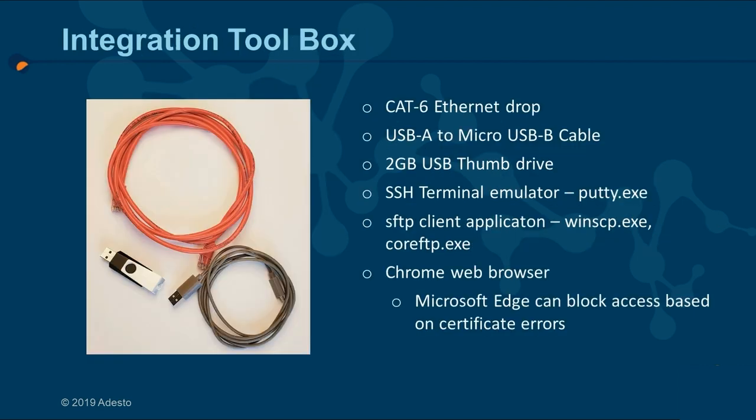Before starting out, have these things on hand: a Category 6 Ethernet drop cable, a USB-A to micro USB cable, a 2GB flash thumb drive, and also have the following software: a terminal emulator such as PuTTY, and an SFTP client application such as WinSCP or CoreFTP.